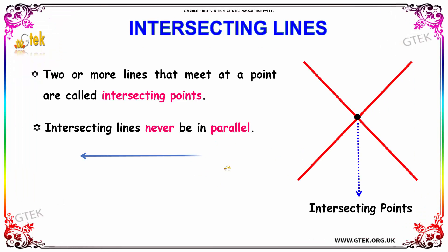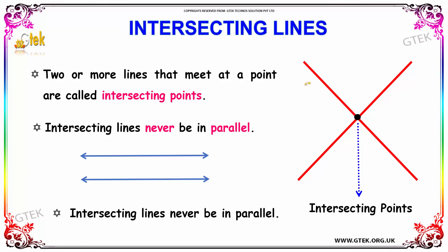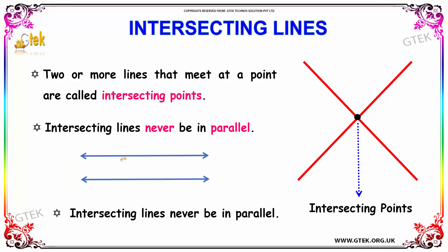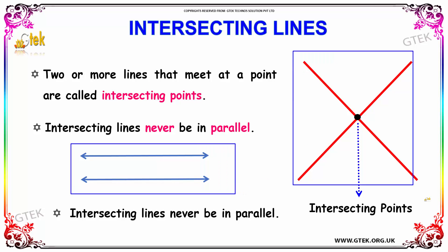What is an intersecting line? If two or more lines meet at a point, then that point is known as the intersecting point. Intersecting lines will never be parallel. Two lines are said to be parallel if they run equidistant from each other, so if lines are parallel they can never be intersecting lines.